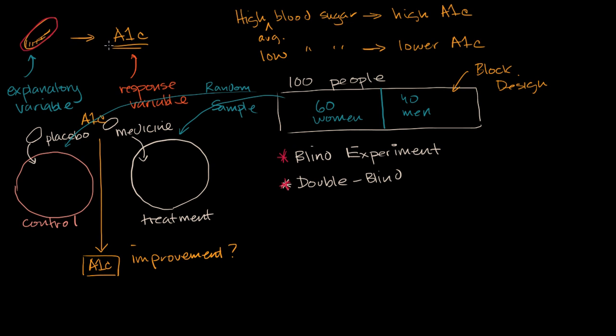We have a whole video on it on Khan Academy, but it is an average measure of your blood sugar over roughly a three-month period. So that's the explanatory variable - whether or not you're taking the pill - and the response variable is what does it do to your hemoglobin A1c.